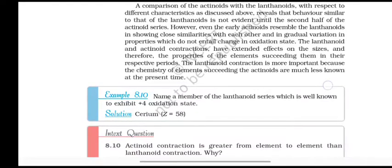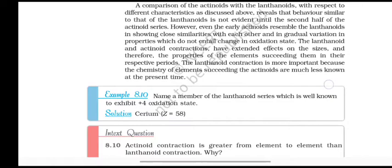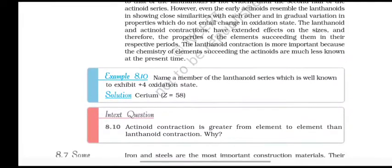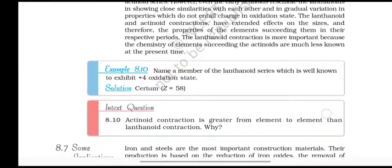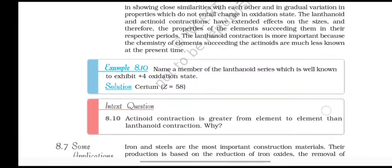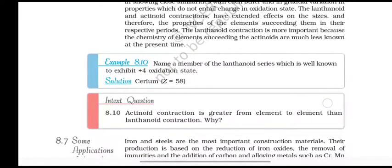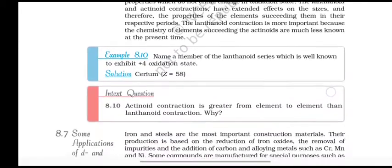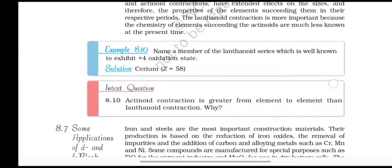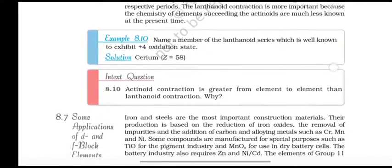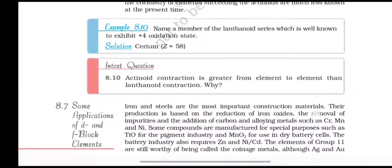A comparison of the actinoids with the lanthanoids with respect to different characteristics as discussed reveals that behavior similar to that of lanthanoids is not evident until the second half of the actinoid series. However, even the early actinoids resemble the lanthanoids in showing close properties with each other and in gradual variation in properties which do not entail change in oxidation state. The lanthanoid and actinoid contractions have extended effects on the sizes and therefore the properties of the elements succeeding them in their respective periods. The lanthanoid contraction is more important because the chemistry of elements succeeding the actinoids is much less known at present.